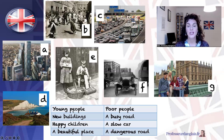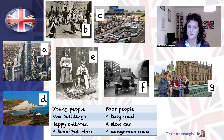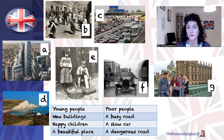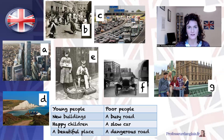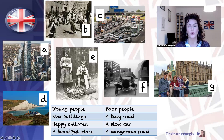So when we're using adjectives in English, the adjective usually goes before the noun, not after. We say 'young people' — we don't say 'people young', for example. We also don't pluralise adjectives. For example, here I have one slow car, here I have a lot of slow cars. I wouldn't say 'a lot of slows cars' — I don't pluralise the adjective.